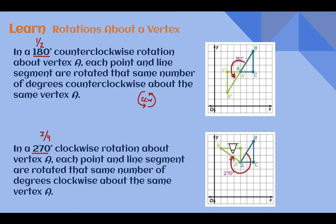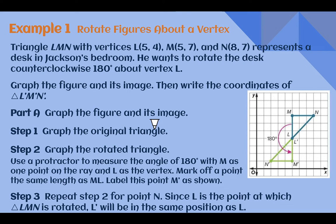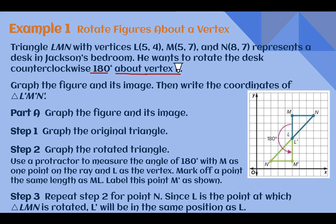All the points on the shape are rotated the same amount. Sometimes these rotations are hard to visualize, so it's important to look at where it starts and where it ends and compare points. Example 1: Rotate figures about a vertex. Triangle LMN with vertices L at (5,4), M at (5,7), and N at (8,7) represents a desk in Jackson's bedroom. He wants to rotate the desk counterclockwise 180 degrees about vertex L. Our first step is to graph it. Remember, the original pre-images do not have prime symbols. When you see 'about vertex,' that point stays the same — everything else moves around it.